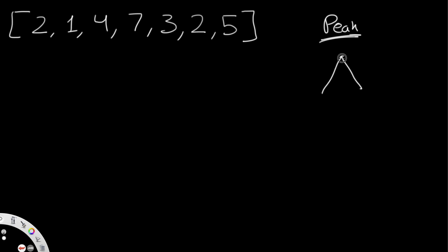By the peak, I mean the topmost point. Finding a peak is simple: everything to the left of the peak is less than it, and everything to the right is also less than it. Note that whatever is at the zeroth index and the last index can never be a peak, because the zeroth index has nothing to its left and the last index has nothing to its right. So we ignore those two and start looking from index 1.